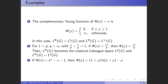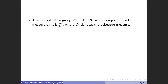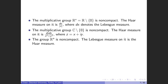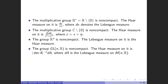I want to give some locally compact group examples because our results will depend on the compactness of the group. The multiplicative group R* is a non-compact locally compact group with Haar measure given by dx over |x|, where dx denotes the Lebesgue measure. The multiplicative group C* is also a non-compact locally compact group. R^n is another non-compact locally compact group example, and the Lebesgue measure on R^n is the Haar measure. The general linear group is another non-compact locally compact group, with Haar measure given by a formula where A is the Lebesgue measure on matrices.